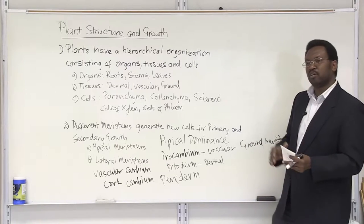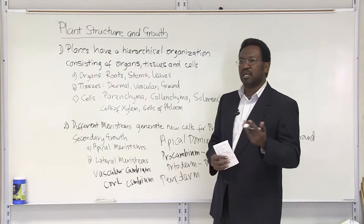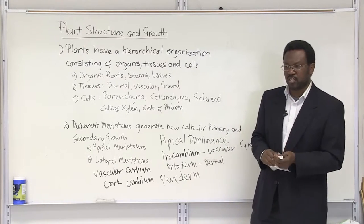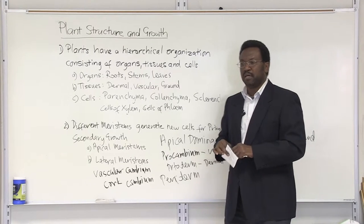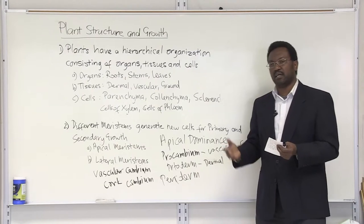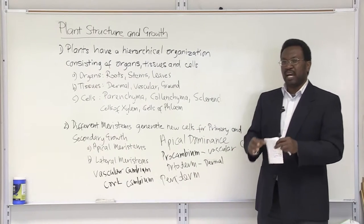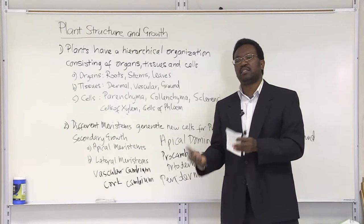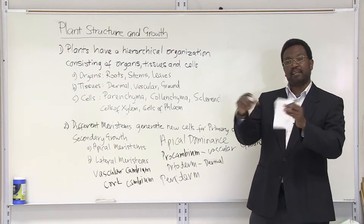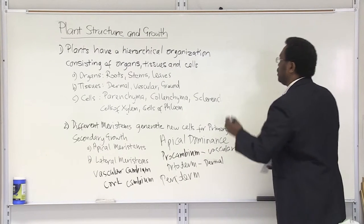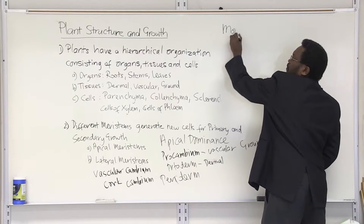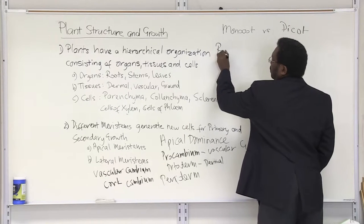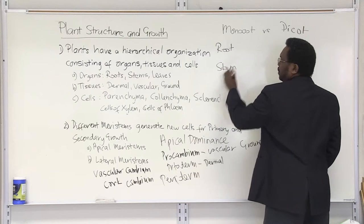I'm going to draw out the shapes as I discuss them so you can get a better perspective of what they look like. You'll examine them in the lab and that should make sense when you see them under the microscope. As we compare monocot versus dicot root, stems, and leaves and look at the organization, specifically we're going to look at the arrangement of the vascular tissue — namely the xylem and the phloem vessels in between. So let's put up a little chart: monocot versus dicot, and then root, stem, and leaf.